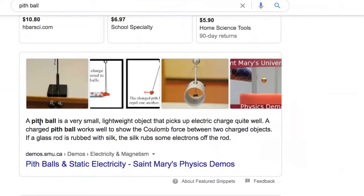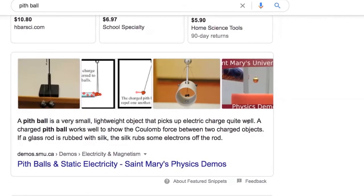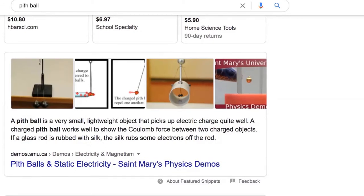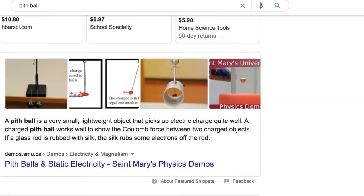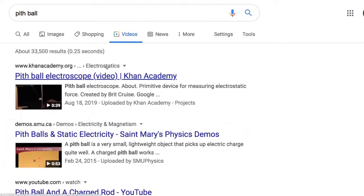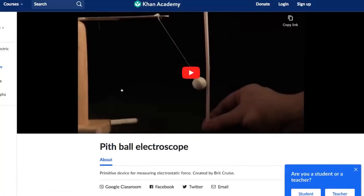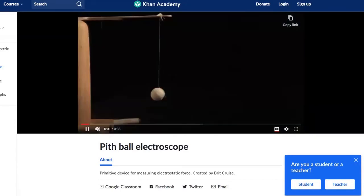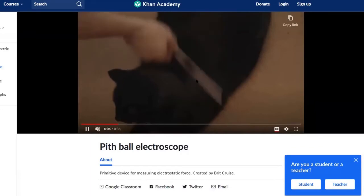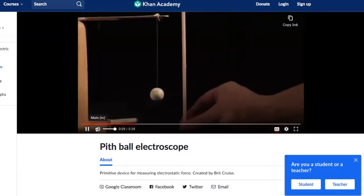You see pith ball is a very small lightweight object that picks up electric charge quite well. A charged pith ball works well to show the Coulomb force between two charged objects. If a glass rod is rubbed with silk, the silk rubs some electrons off the rod and then you get to study.